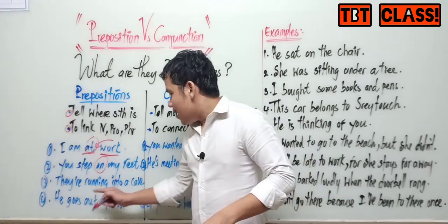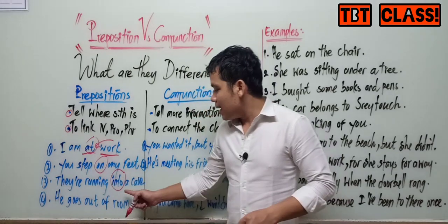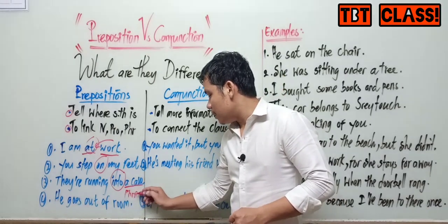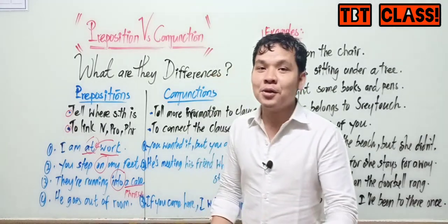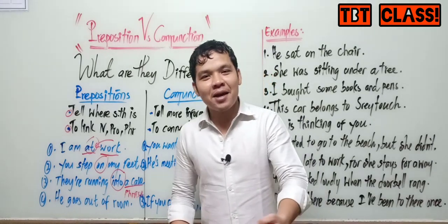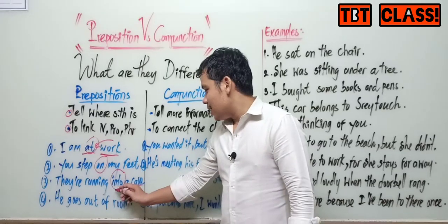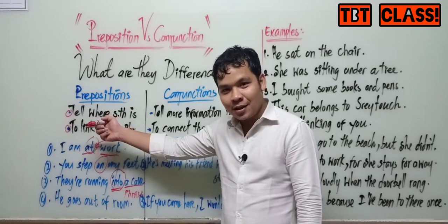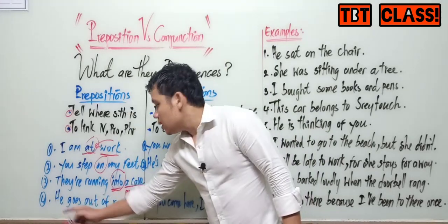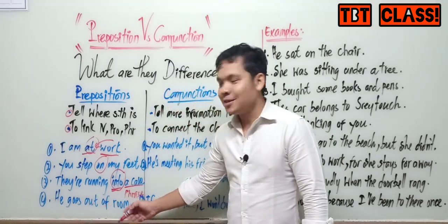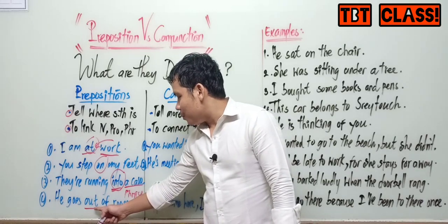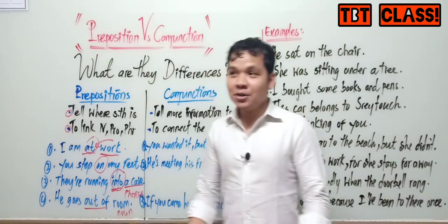Number three: They are running into a cave. "Into" is a preposition — it tells us where they are running. "A cave" is a noun phrase. Number four: He goes out of the room. "Out of" is also a preposition — it tells us where does he go, out of the room.